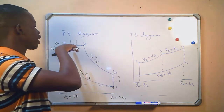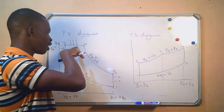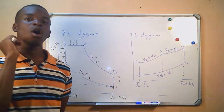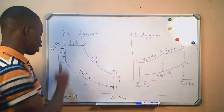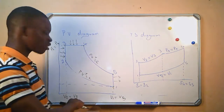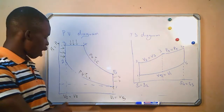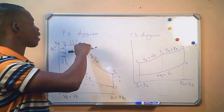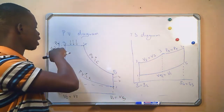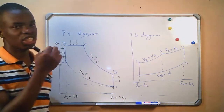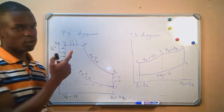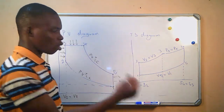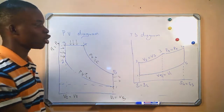Notice we have two phases of combustion. We have combustion taking place at constant volume where our V2 is equal to V3, and we have combustion again taking place at constant pressure where our V3 is equal to our V4. This is the PV diagram of the Joule cycle.